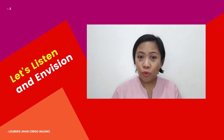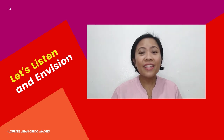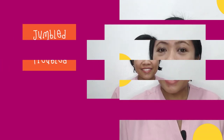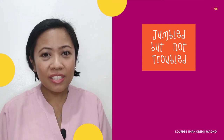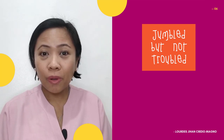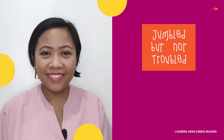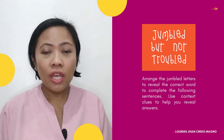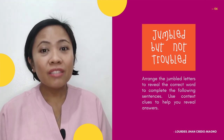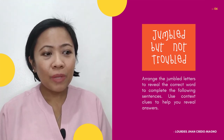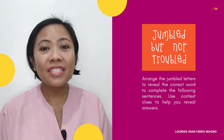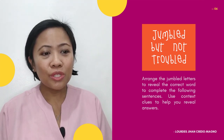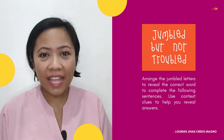Before we discuss the story, let us answer this activity. The title of this next activity is called Jumbled but Not Troubled. Arrange the jumbled letters to reveal the correct word to complete the following sentences. Use context clues to help you reveal the answers.